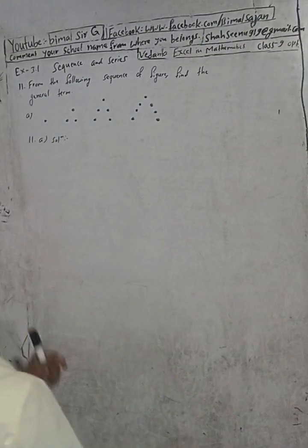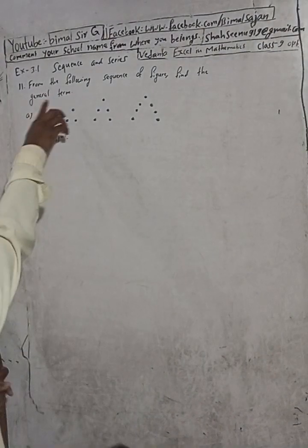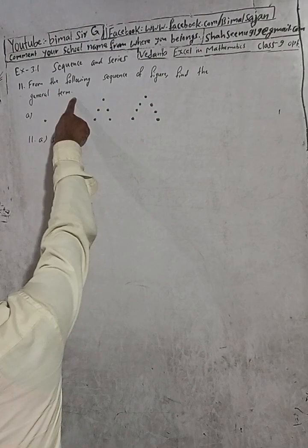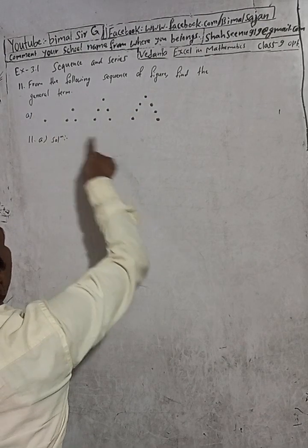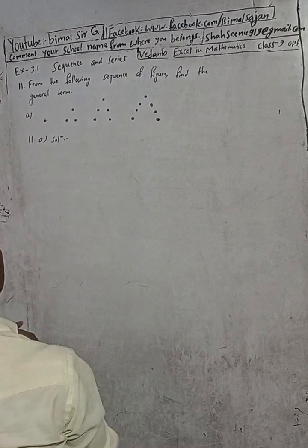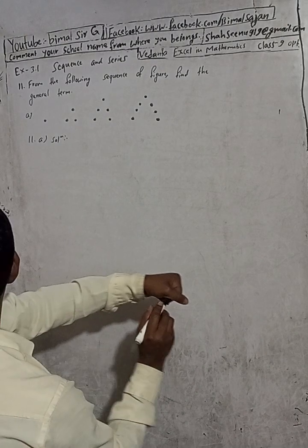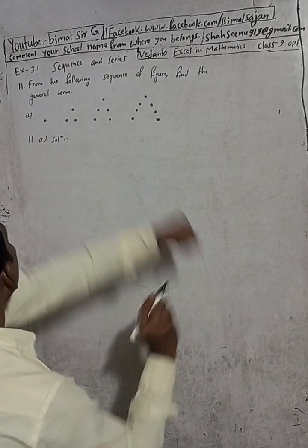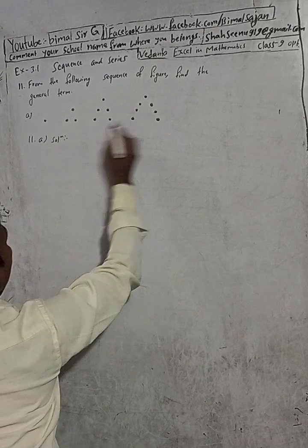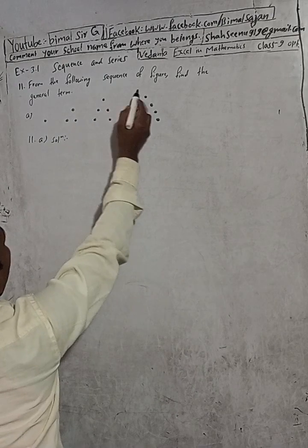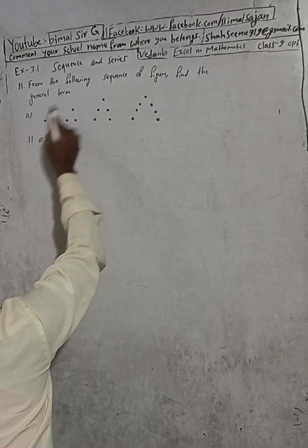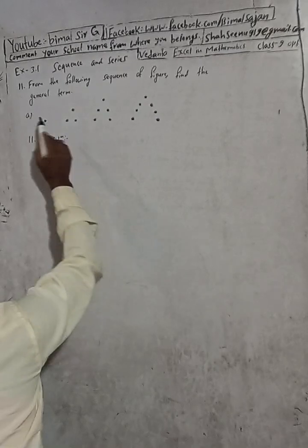The question is here: from the following sequence of figures, find the general term. So from the sequence of figures we can write the sequence of numbers. From the following sequence of figures, find the general term — so this is the sequence of the figure.